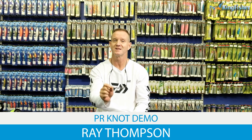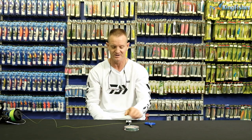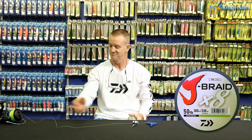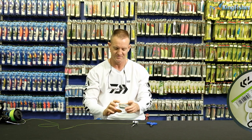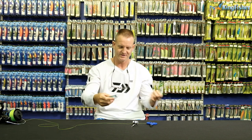Today I'm going to be demonstrating the PR knot. What we require for the PR knot: PR bobbin, pair of braid scissors, and I'm going to be using 50 pound J braid with rhino braid 180 pounds.